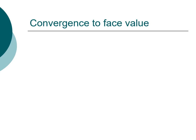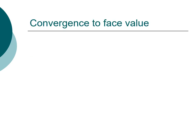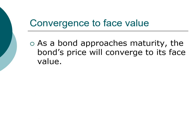Now that you understand how to compute bond value as well as bond yield and return, let's take a look at how bond prices change over time. The first example we're going to go over is how bond price changes simply due to the elapse of time. One of the bond theories says that as a bond approaches maturity, the bond price will converge to its base value.